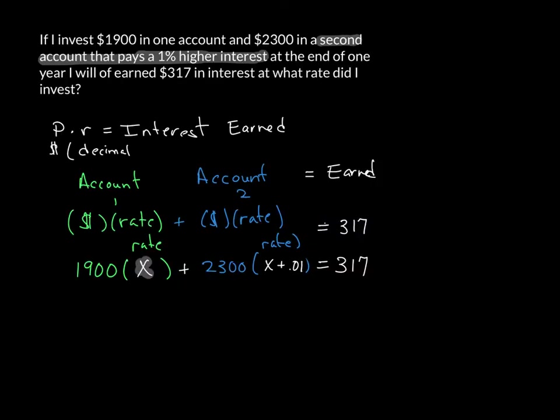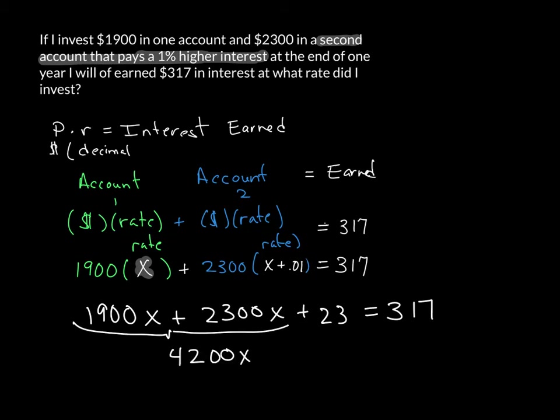So now we're just going to go through and solve for X, and when we solve for X, that's going to be in account one, the one account that has the $1,900. So that gives me 1,900X plus 2,300X plus 23 is equal to 317. Combine my X's. 4,200X, and I'm going to do this in one step. I'm going to subtract 23 from this side of the equation as well. So that leaves me with 294.